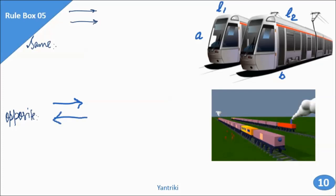For opposite directions, refer to rule box number 3 or 4. If you haven't seen that video, please go and watch it — it's already in the playlist. The key point is: if they are moving in opposite direction, we do addition of speeds; if they are moving in same direction, we do subtraction.